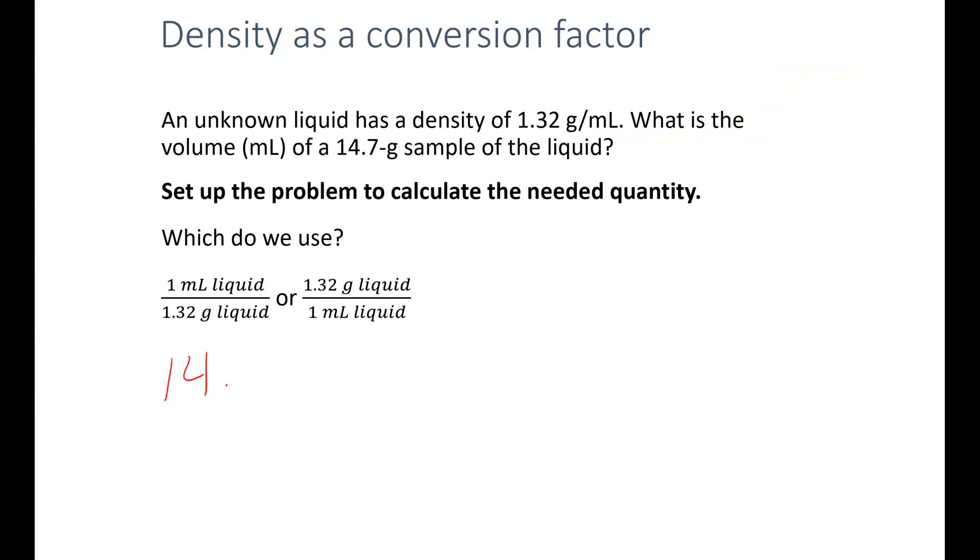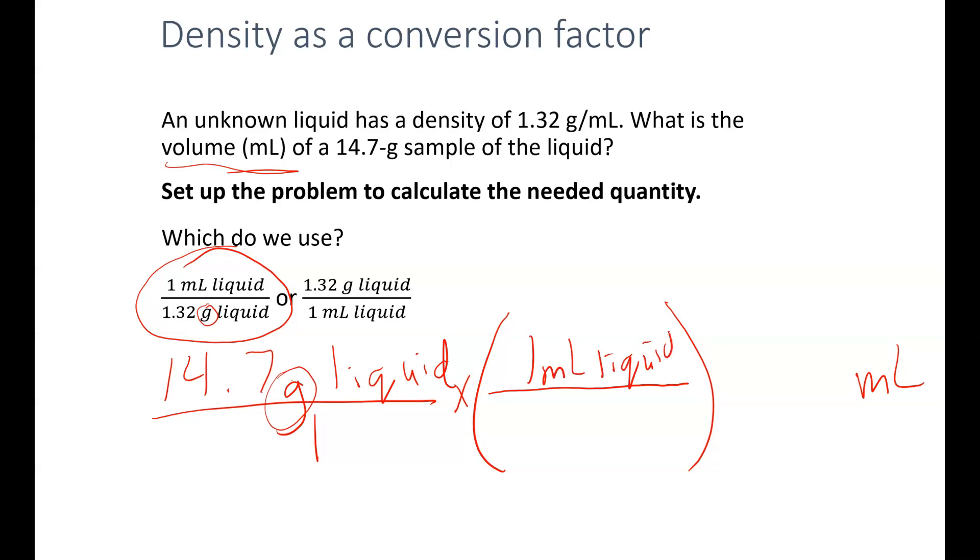We have our 14.7 grams of liquid. I'm going to use one of these two conversion factors. So I'm going to be multiplying by a fraction again, just like we did all the conversions. We want to get rid of grams and we want our volume in milliliters. So our answer is going to be in milliliters. Grams on the top of the fraction, so we need the conversion factor that has grams in the bottom of our fraction. So I have 1 milliliter of liquid for 1.32 grams of liquid.